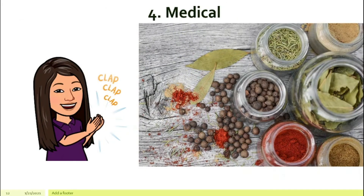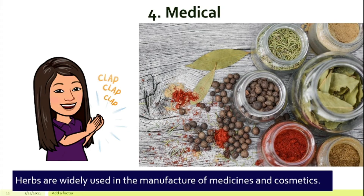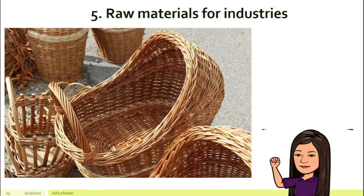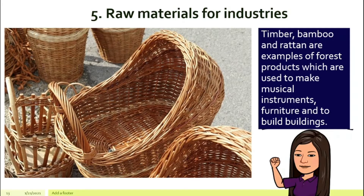Number four, it is very important in the medical field. Because many different types of herbs can be widely used — they are widely used in the manufacture of medicines and cosmetics. And number five, biodiversity like timber, bamboo and rattan are very important. They are the different types of forest products for us to make musical instruments, furniture and buildings that become our raw materials.